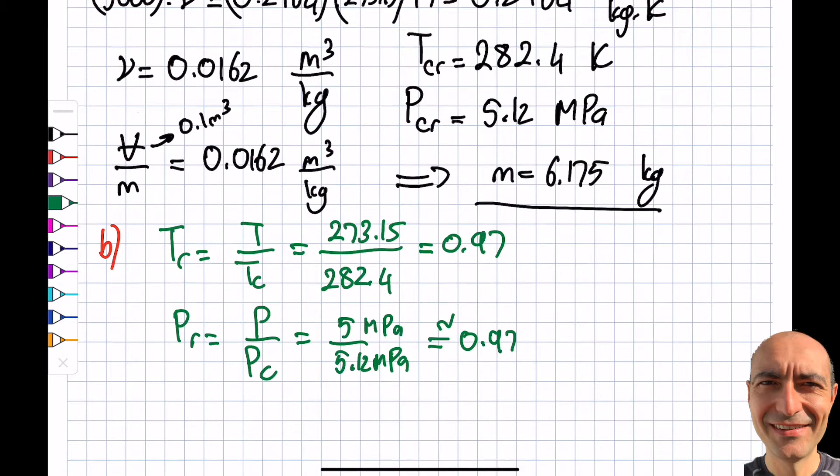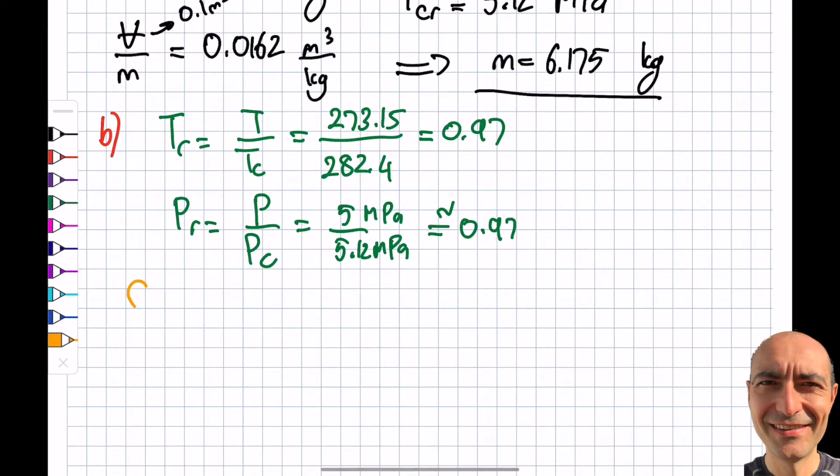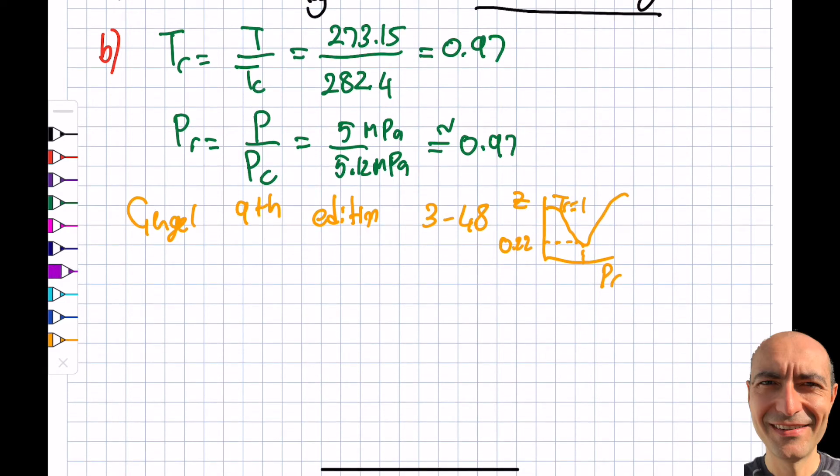I go to Cengel 9th edition figure 3-48, where Z is a function of Pr for different values. I follow wherever it says Tr equals 1 and look at that curve. I find that Z is 0.22 in this particular case.